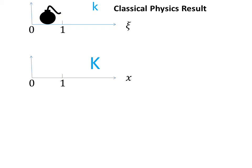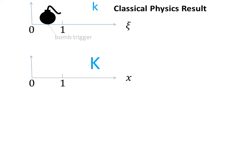Galilean transformations tell us that the two simultaneous flashes in stationary system K are represented as simultaneous flashes in moving system k. The flashes in the moving system k, according to Galilean transformations, will also be simultaneous, but the ray emitted from the front flash will reach the trigger of the bomb before the ray emitted by the back flash.